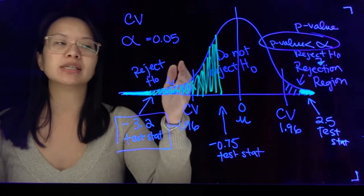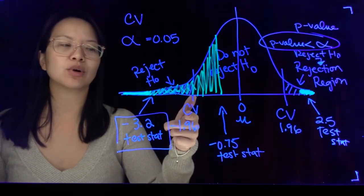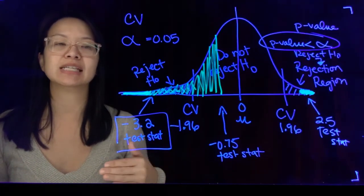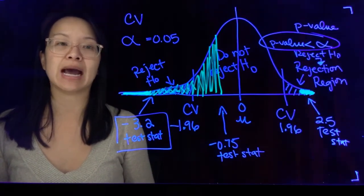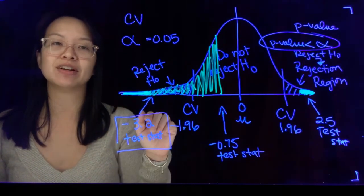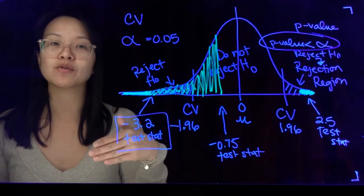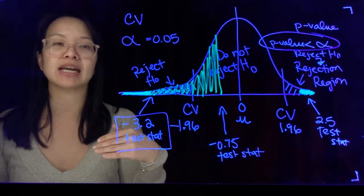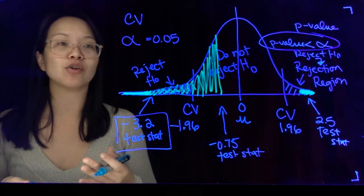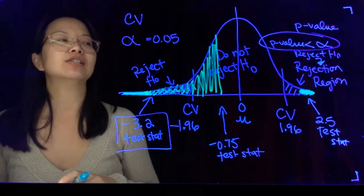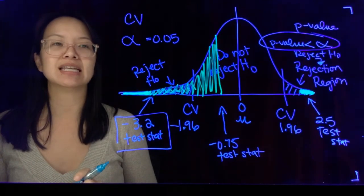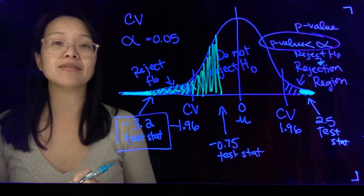The critical value approach is like a pass/fail decision at the critical value line, whereas the p-value is more precise — it tells you the strength of that decision by finding the actual probability. It's similar to taking a class pass/fail versus taking it for a grade. Pass/fail: you just need a 70%, it doesn't matter if you pass with a 71 or a 95. A grade tells you how strongly you performed — an A is different from a B or a C. Critical value is pass/fail; p-value approach is like taking the class for a grade. If you have any questions, just let me know.